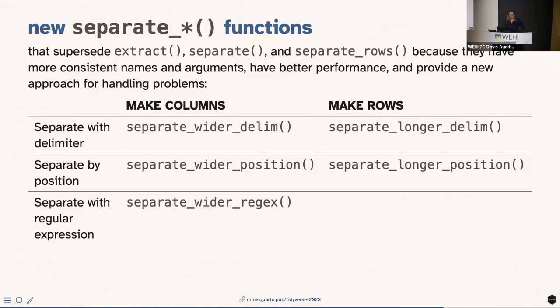Q&A — Online question about whether the .by grouping enhancement includes performance improvements. Speaker: I can't answer that authoritatively. The original motivation was the silent persistent grouping problem, not performance. The .by argument should not be slower, but whether it's faster I'm not certain — there were comments about performance in the blog posts so that would be the place to look.